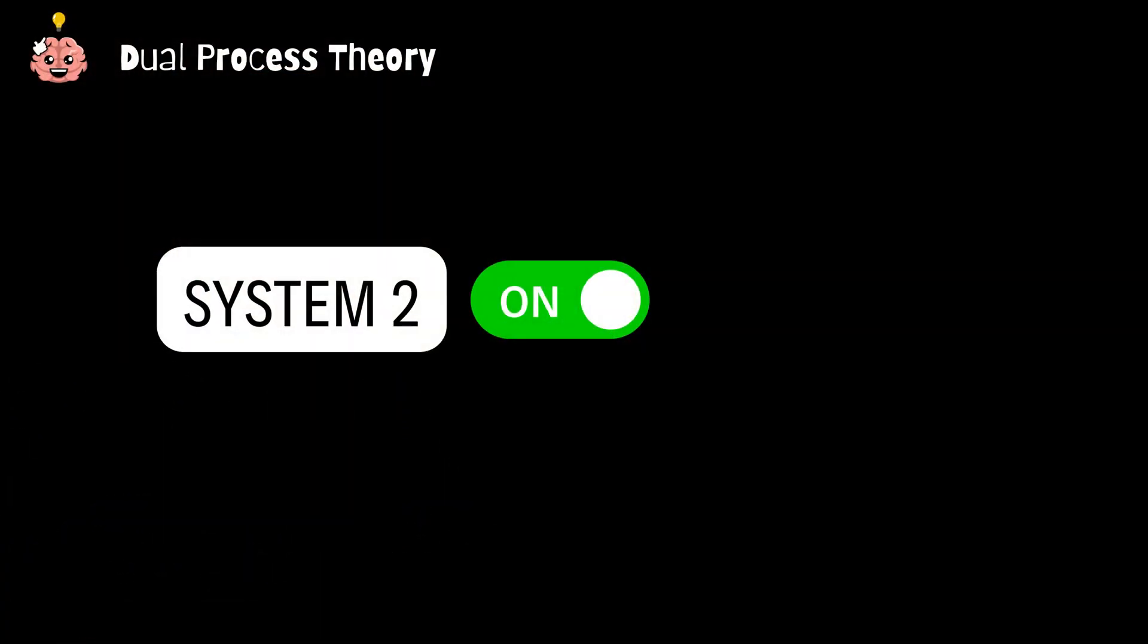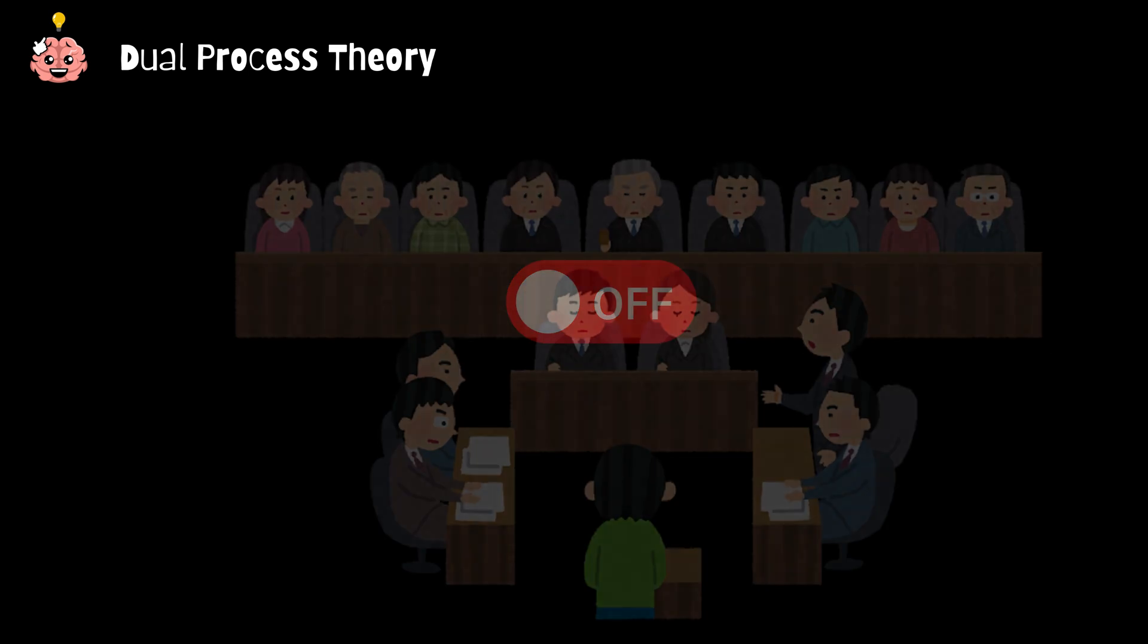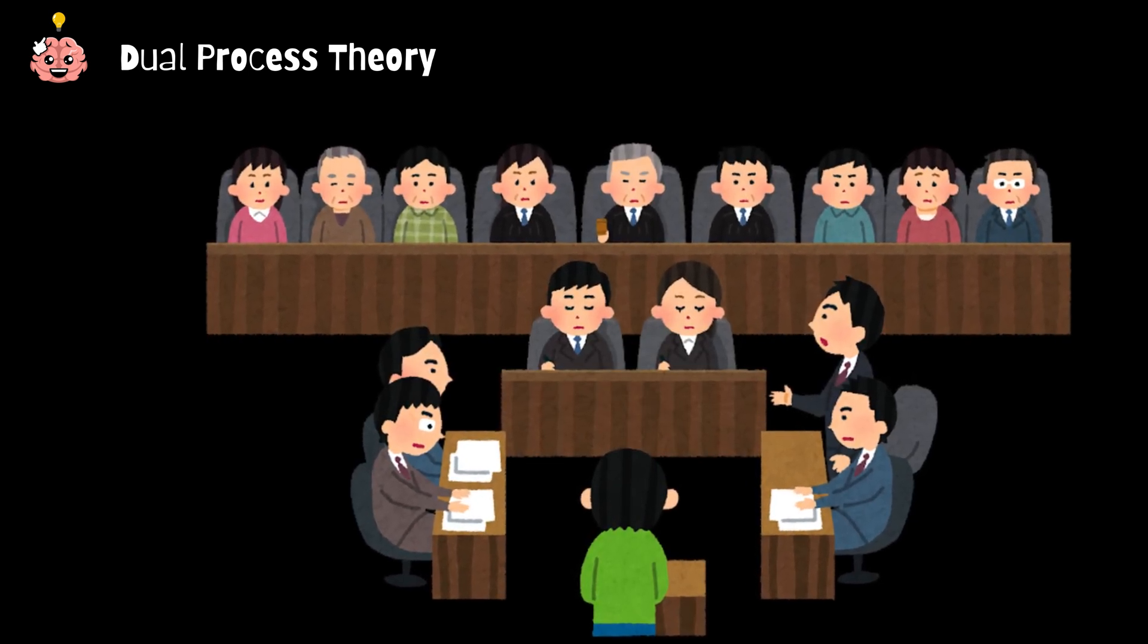Ever wonder why judges are more likely to grant parole in the morning but reject it later in the day? Studies found that after a long day of making decisions, our system two gets tired and we start falling back on quick snap judgments, even in life-changing decisions like court rulings. So if you're ever in court, aim for that morning slot.